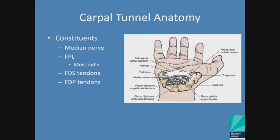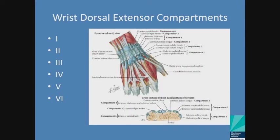Deep to the median nerve, you have the layer of flexor digitorum superficialis tendons — the tendons that only flex the PIP joint. And then you have the FDP tendons just deep to that, which flex both the PIP and DIP joints of the digits. In the wrist, looking at the nail side, these wrist extensors are divided into compartments, each with its own set of tendons and likely its own set of problems.